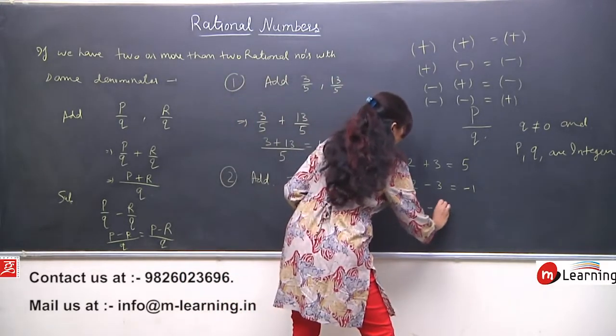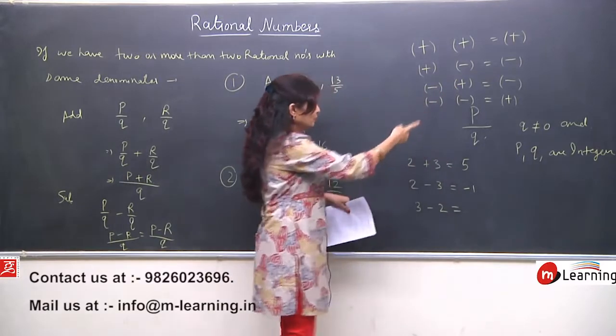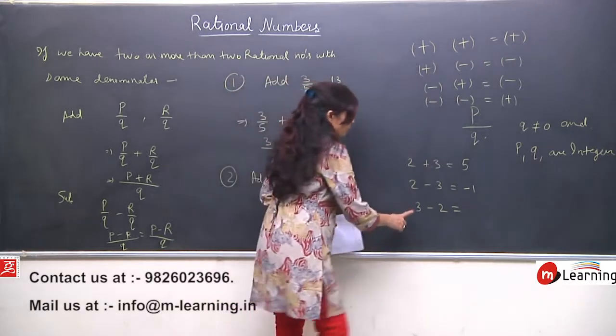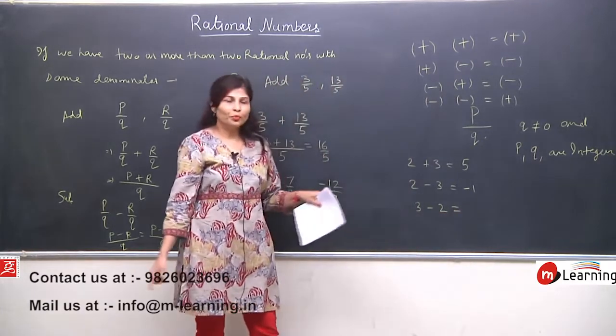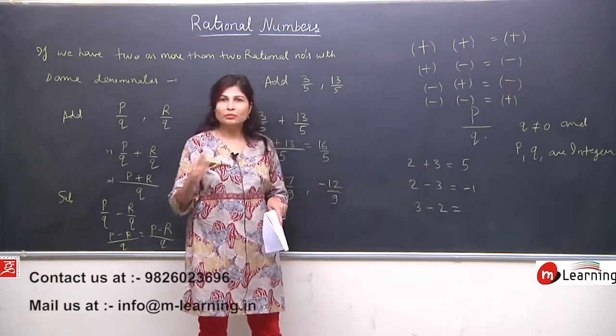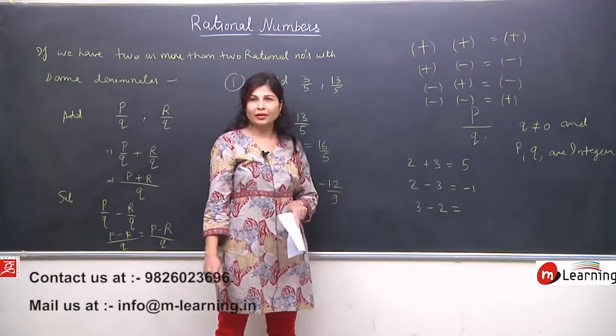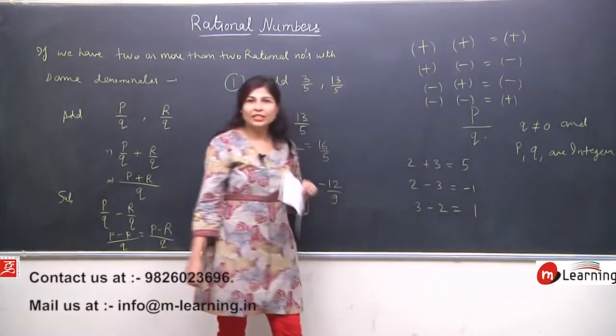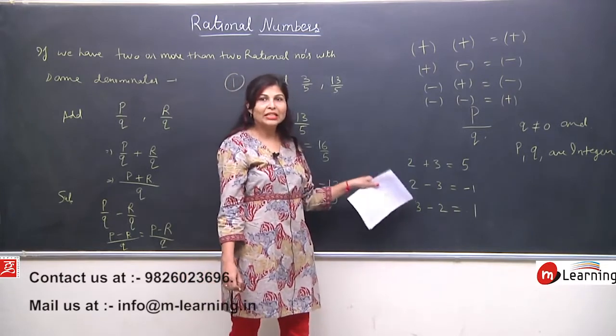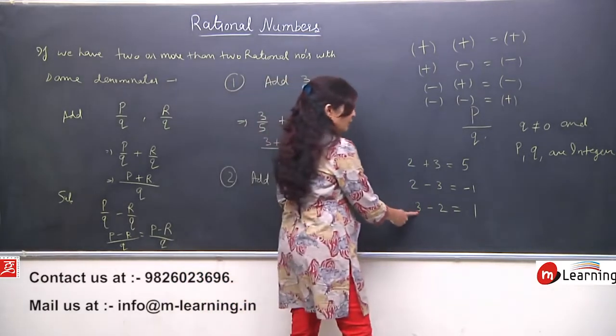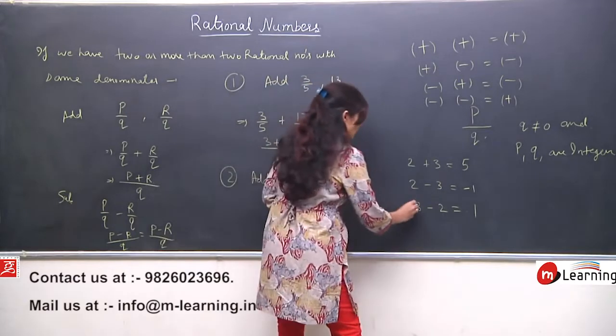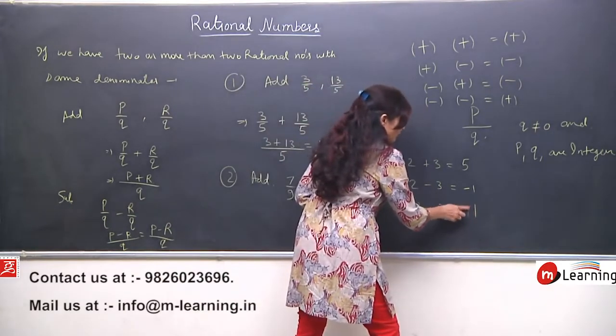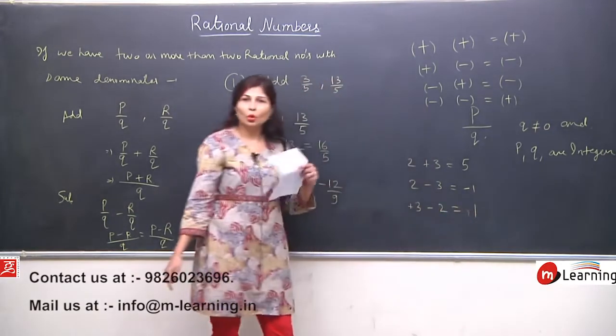Third case: minus plus, 3 minus 2. So what will we do? Plus minus is always minus, means we have to subtract. 3 minus 2, answer is 1. Now we will decide the sign. How is sign decided? We will see the greater number's sign. Greater number here is 3, and it has no sign, means its sign is plus. So answer will be plus 1, and we don't write plus, so we write 1.